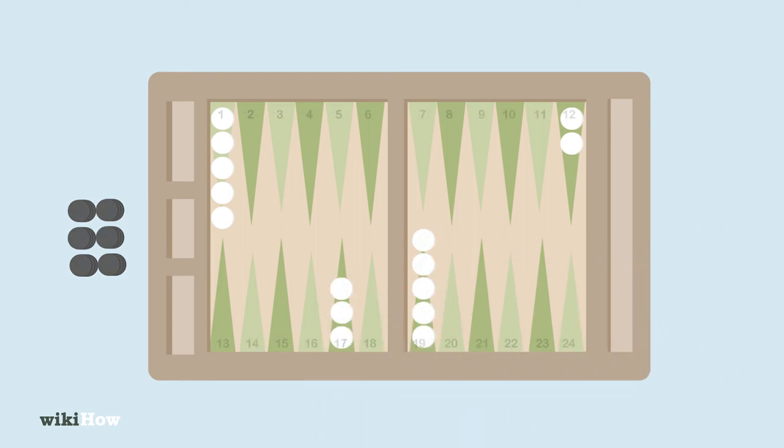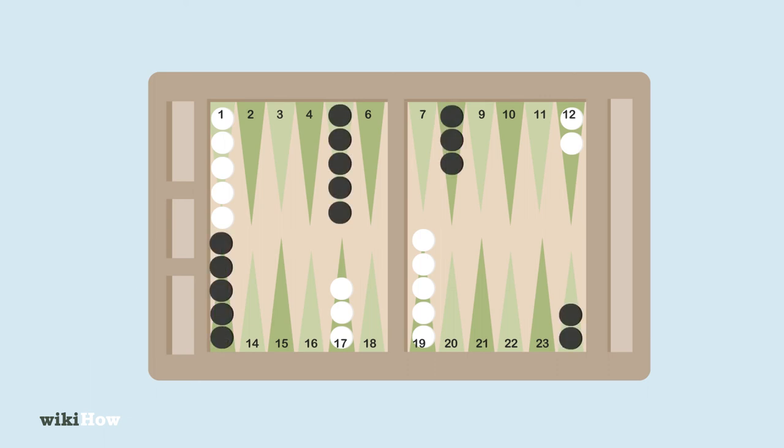Each player's checkers should mirror each other, and the player's checkers shouldn't overlap on any of the points. Once each player's checkers are on the board, you're ready to start playing.